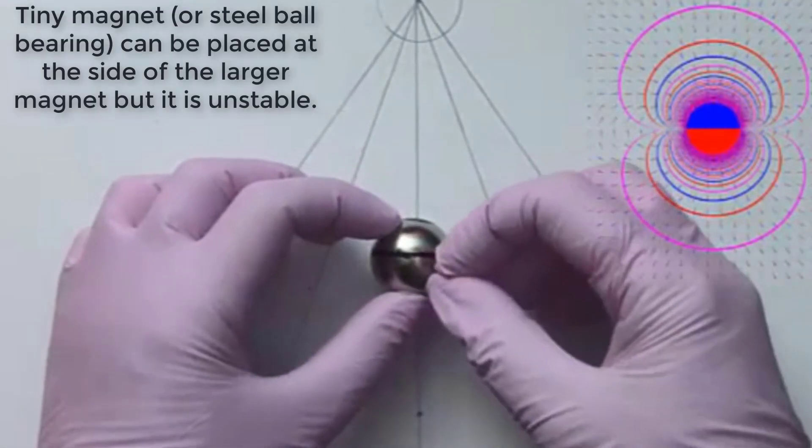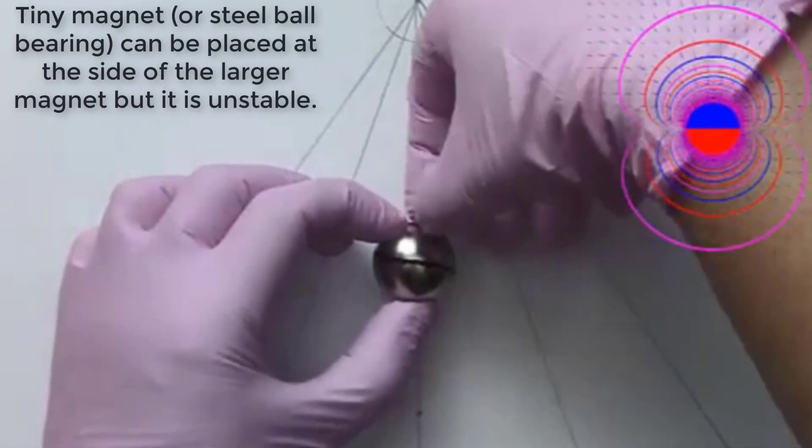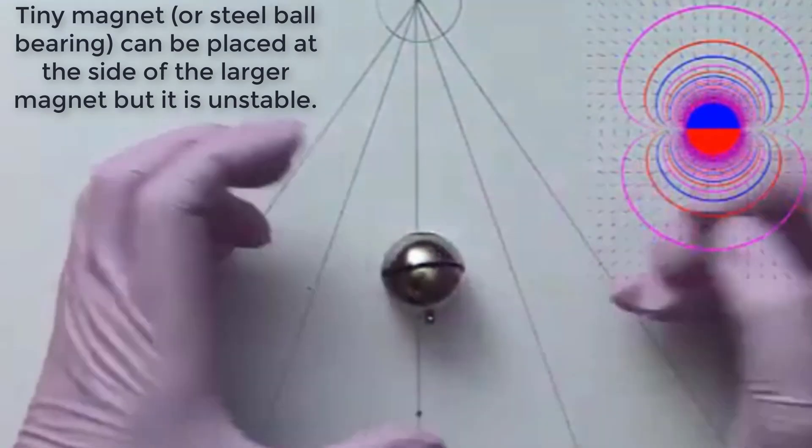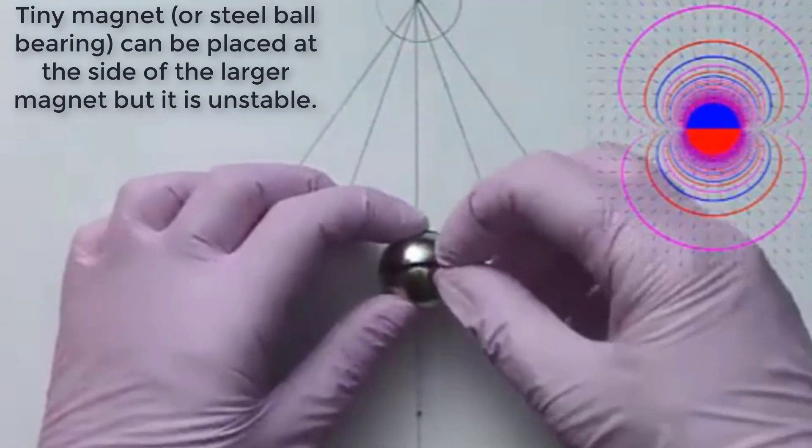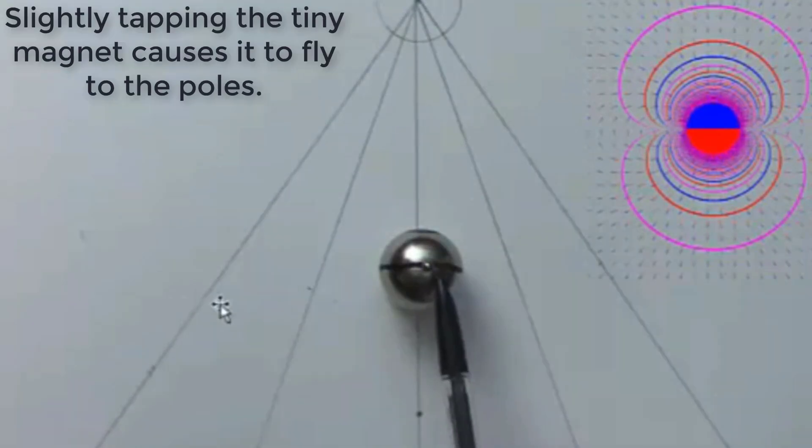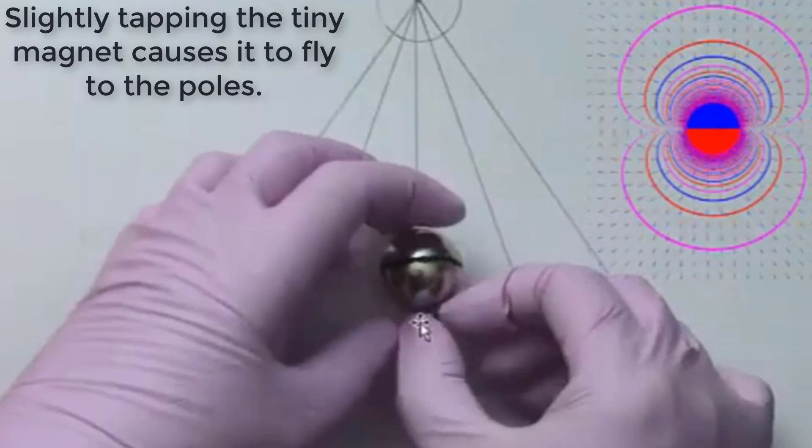Tiny magnet or steel ball bearing can be placed at the side of the larger magnet but it is unstable. Slightly tapping the tiny magnet causes it to fly to the poles.